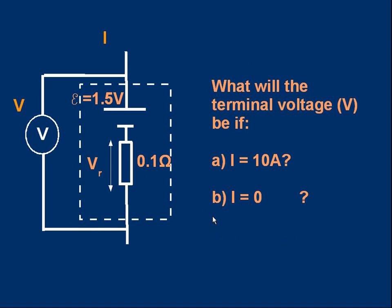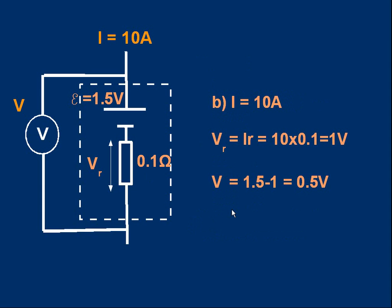Here are a couple of questions to try. What do you think the terminal PD will be, first if the current is 10 amps, and then if the current is 0? When the current is 10 amps, the lost volts — I times little r — is 10 times 0.1, which is 1 volt. We subtract that 1 volt from the EMF: 1.5 minus 1 is 0.5 volts. The terminal PD has dropped to only 0.5 volts because the current is so big. As the current gets bigger, the terminal PD gets less because of the effect of lost volts.